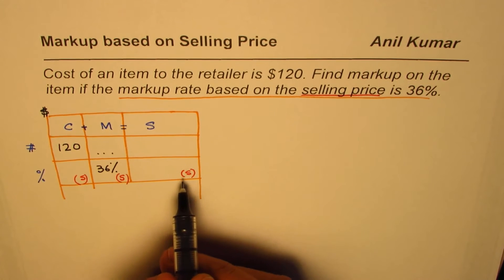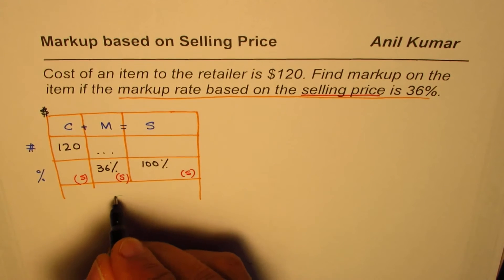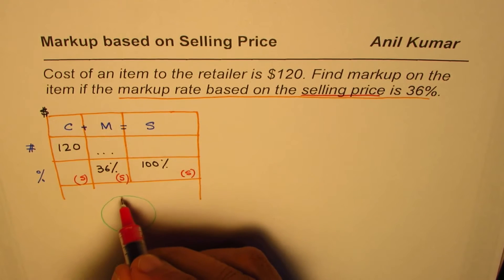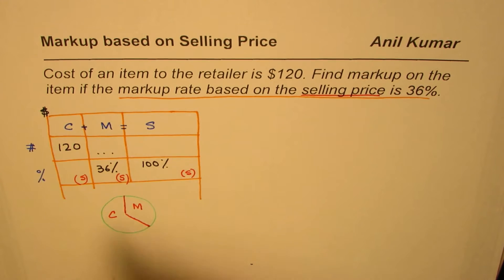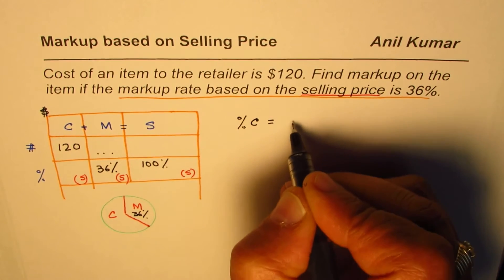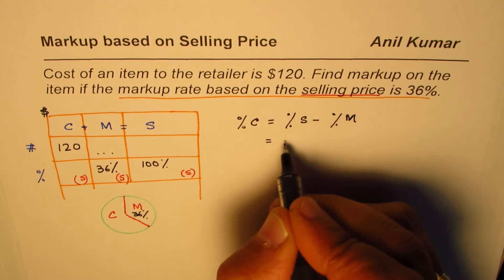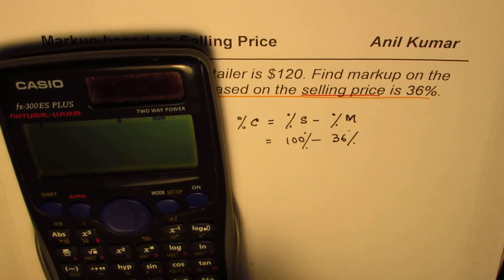Since the markup is based on selling price, we take 100 percent of the selling price. We know markup is 36 percent. Selling price includes two things: cost and markup. If markup is 36 percent of selling price, then the percentage cost equals percentage sales minus percentage markup, which makes sense.